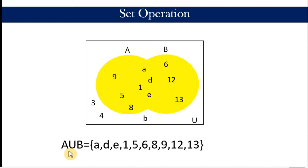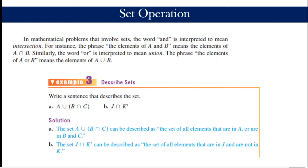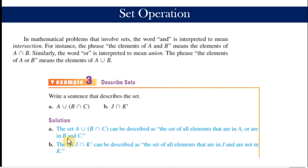This slide tells us that normally the word 'and' is associated with the operation intersection, while the word 'or' is associated with the operation union. For example, how do we write in words this expression? We say: the set of all elements that are in A or are in B and C. The 'or' here is equivalent to the union symbol, and the 'and' here in English is translated to intersection. The second one uses intersection, so we say: the set of all elements that are in J and are not in K.